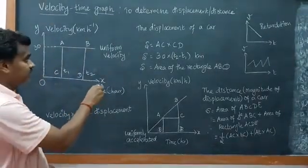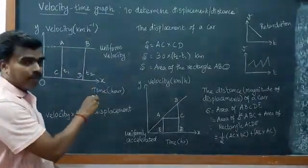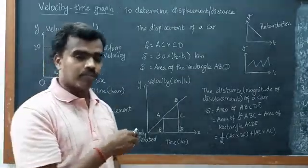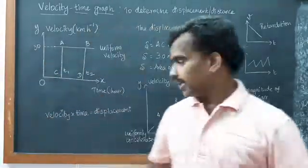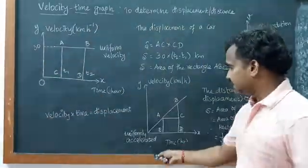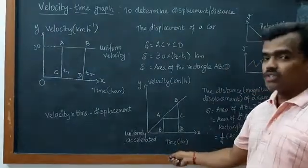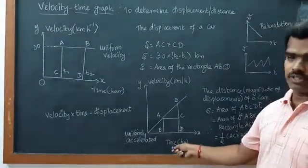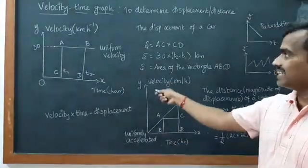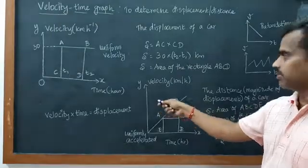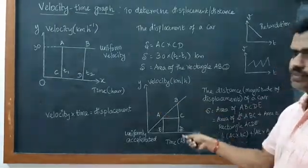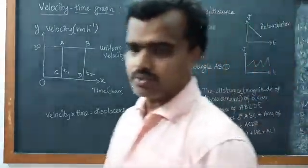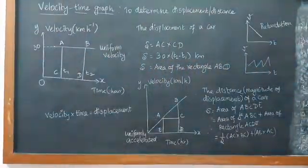Look here — this is uniformly accelerated motion and this is uniform velocity. Both have different meanings: uniform velocity means the car moves at constant velocity, while uniformly accelerated means the acceleration is constant. Here the velocity remains constant for the uniform case. I hope you understand well — see you in the next video, thank you.